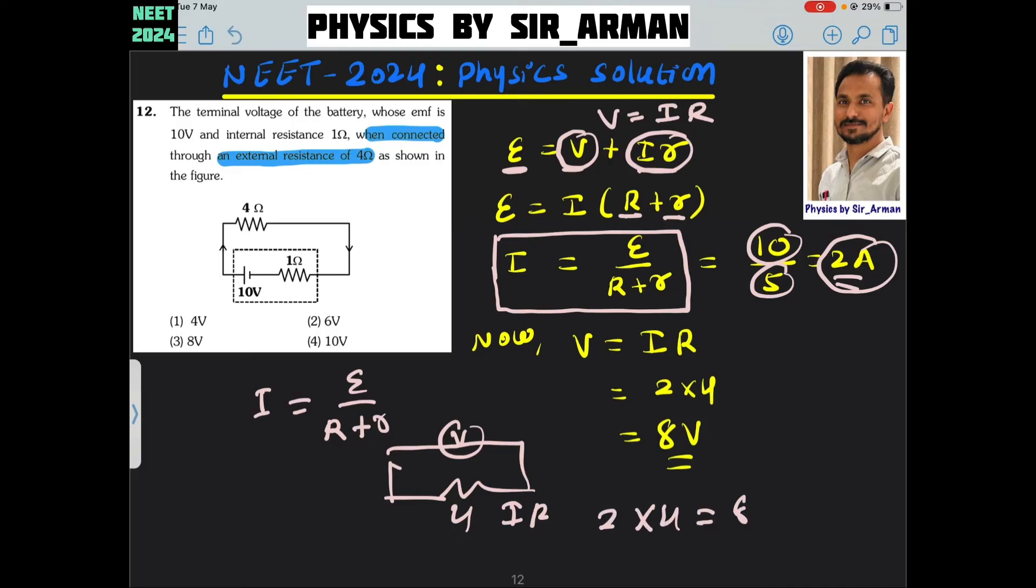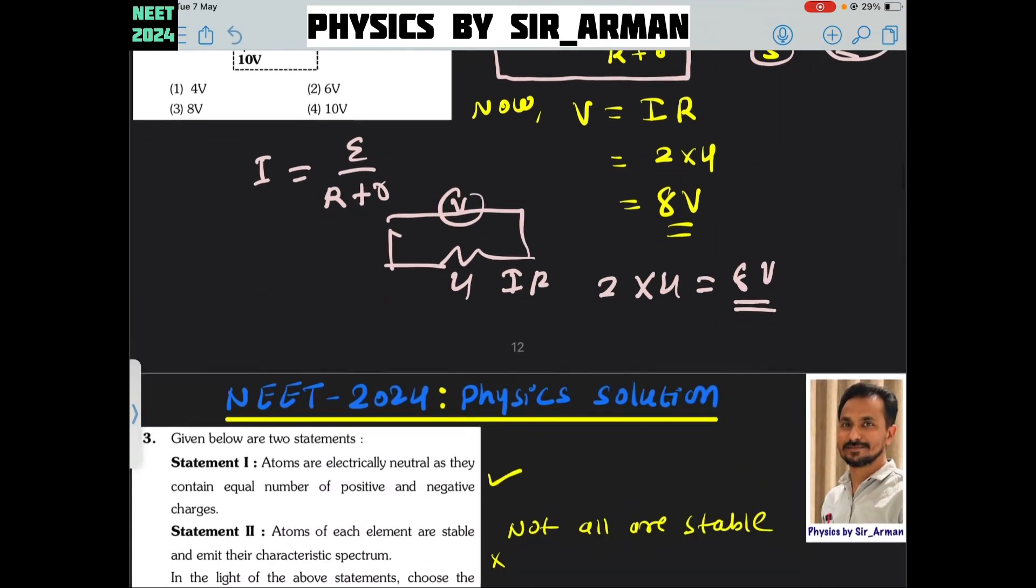The current passed through the resistor will be 2 ampere and the resistance of this is 4. So it is 2 into 4 will be 8 volt. Terminal potential will be 8 volt.